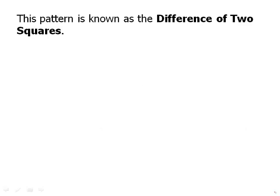This new pattern we're learning is known as the difference of two squares. As the name says, it's just one square minus another square: a squared minus b squared, and this factors into a plus b times a minus b.